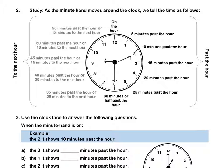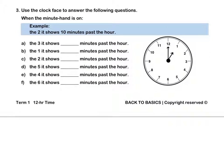Let's look at question 3. Use the clock face to answer the following questions. When the minute hand is on the 2, it shows 10 minutes past the hour. When the minute hand is on the 3, so it would be over there, it shows 15 minutes past the hour. Pause this video to complete question 3.